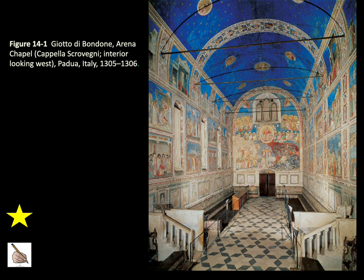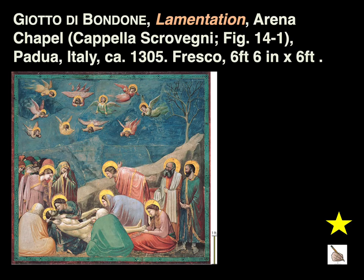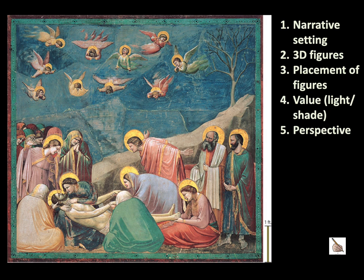Here is Giotto's Arena Chapel, located in Italy, made between 1305 and 1306. We are going to look at one painting within this chapel. During the Lamentation, Christ has been crucified — as you can see, he's been taken down off the cross and is being mourned by his mother and followers. Five key components of this painting include a narrative setting, 3D figures, the placement of figures, value, and perspective.